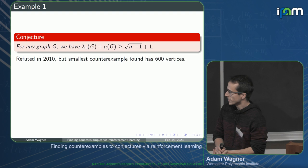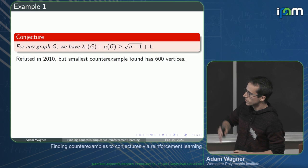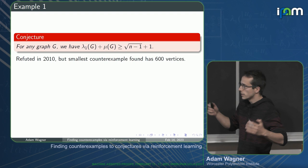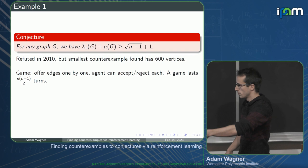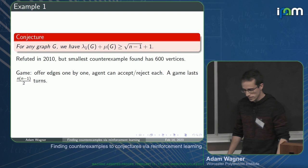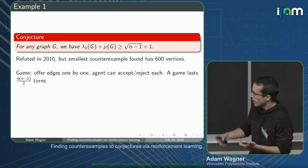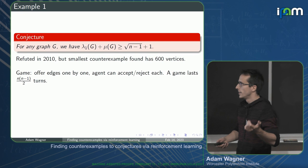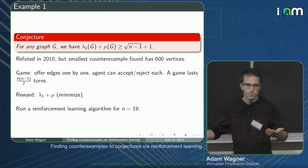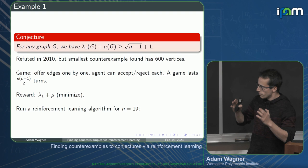To use reinforcement learning, we need to specify two things: how to phrase the conjecture as a game, and what the score function should be. We phrase generating a graph as a game by offering each edge one by one; the player makes a decision for each edge, and the game ends after n(n-1)/2 turns. The score function should reflect how close the final graph is to being a counterexample - in this case, we want to minimize λ₁ + μ, which is equivalent to maximizing -λ₁ - μ. That's all we need to specify.